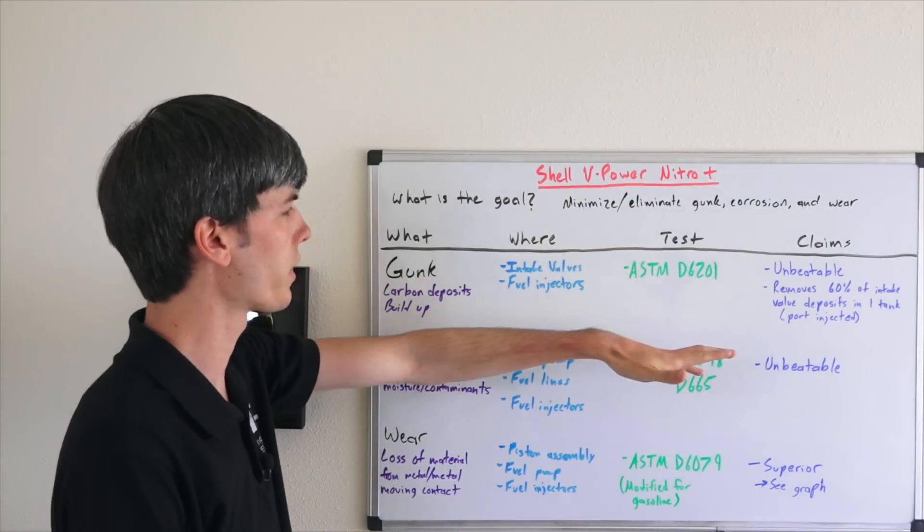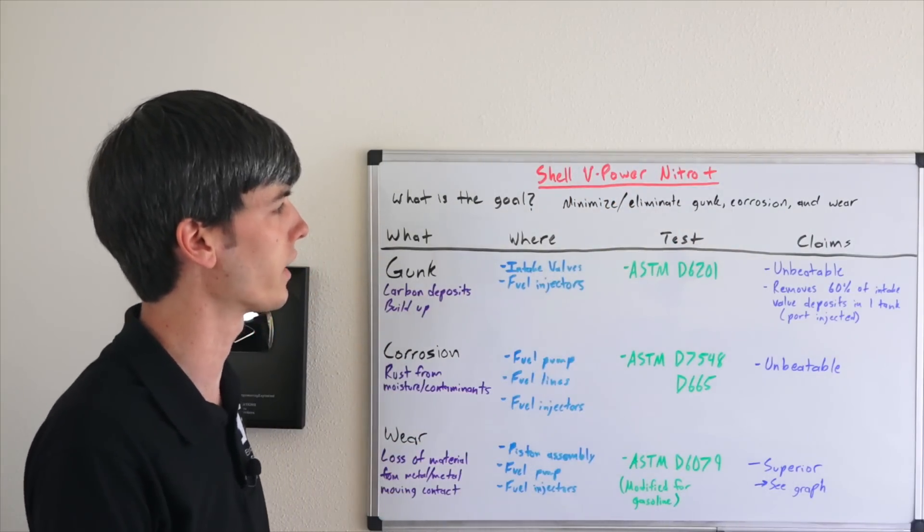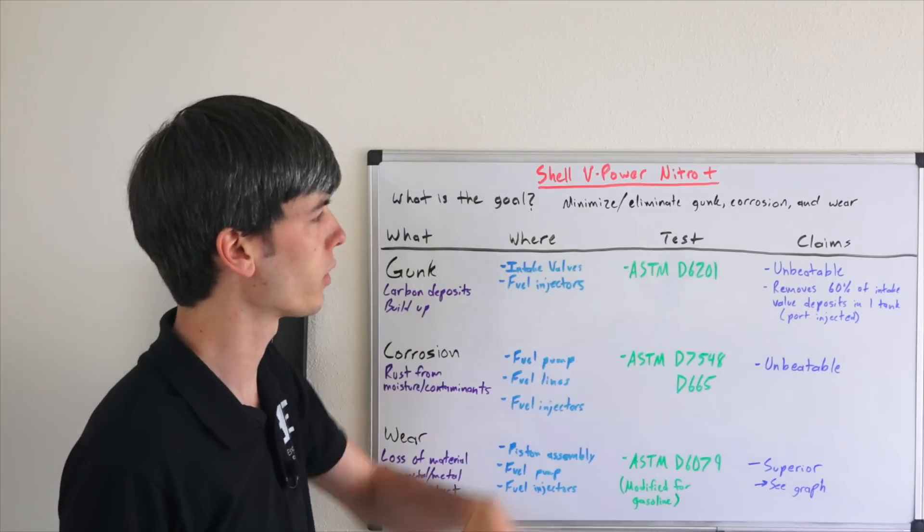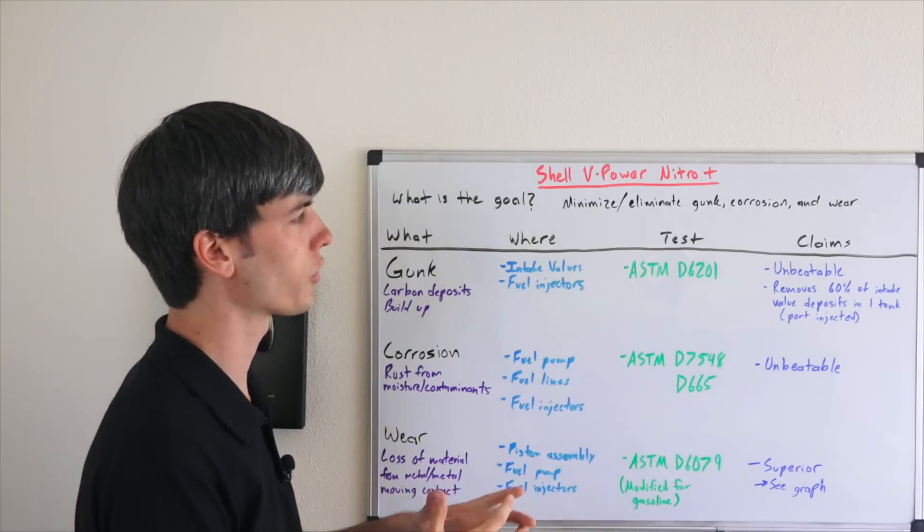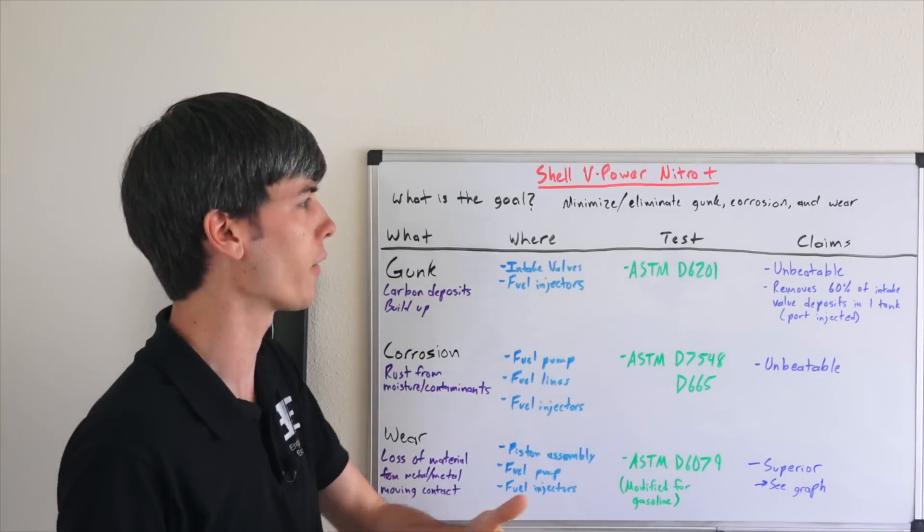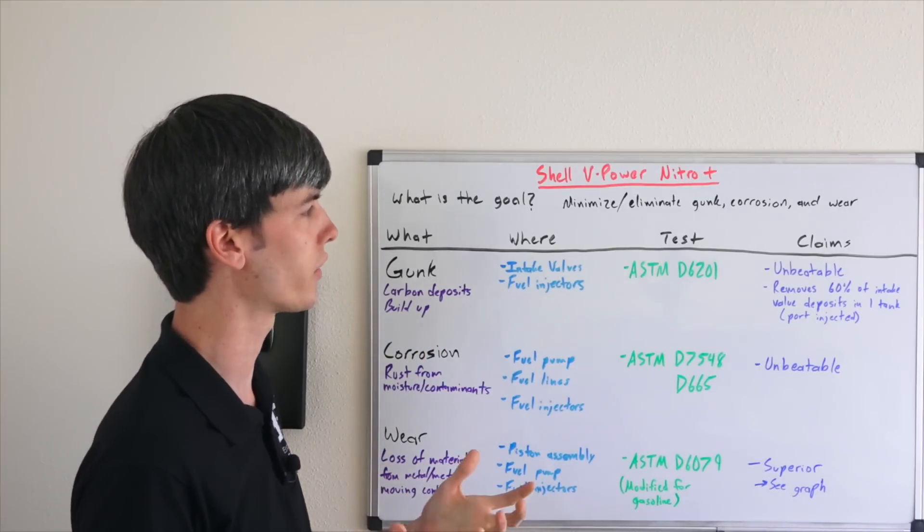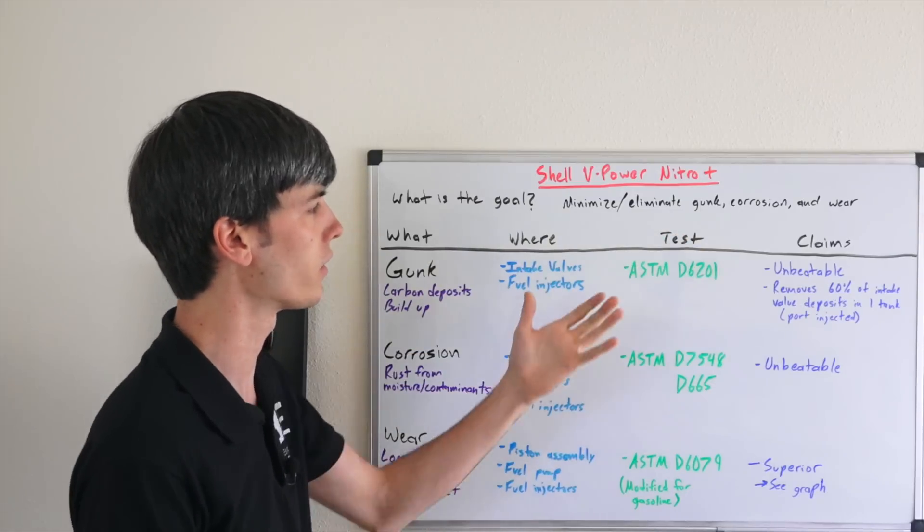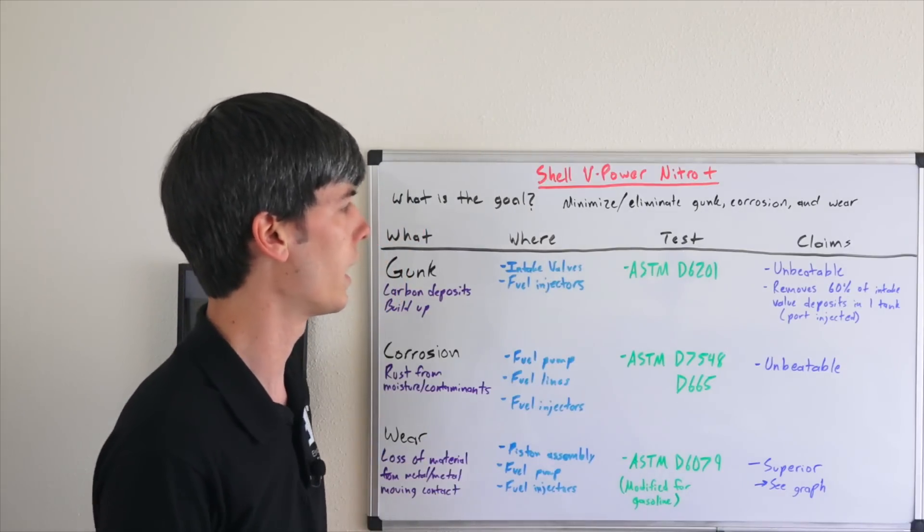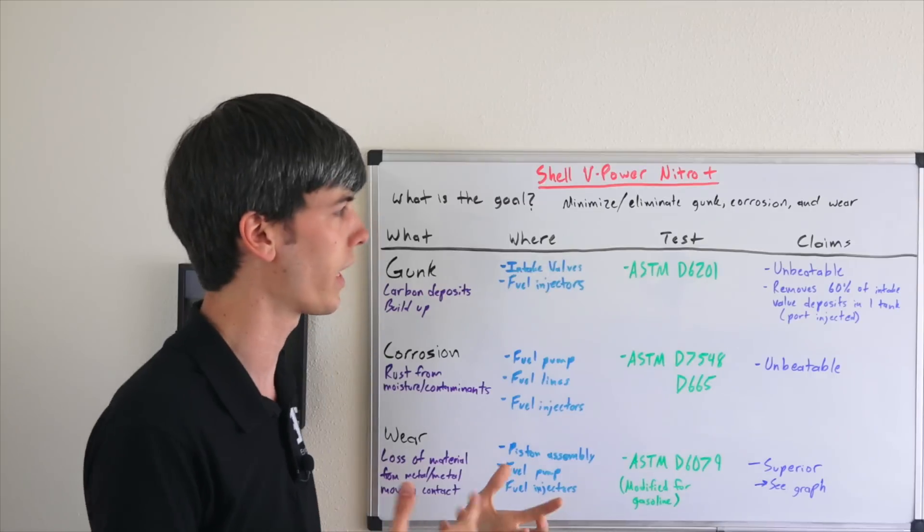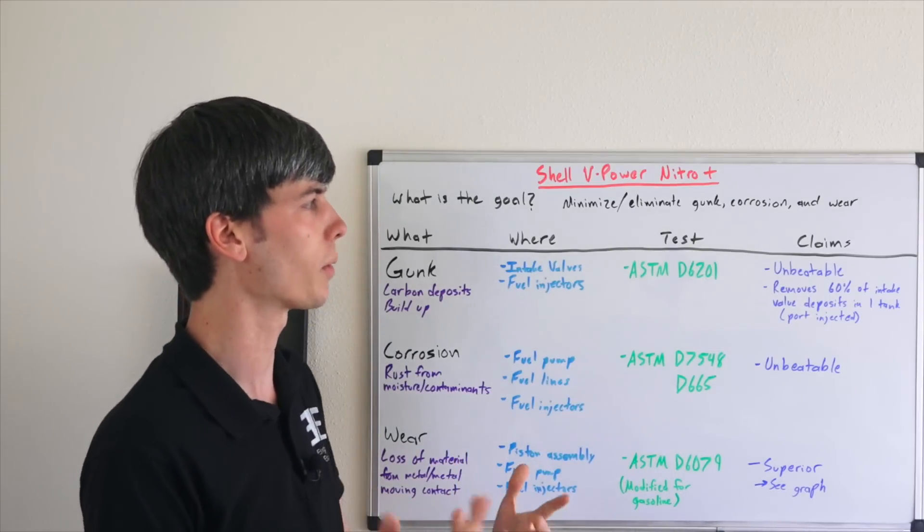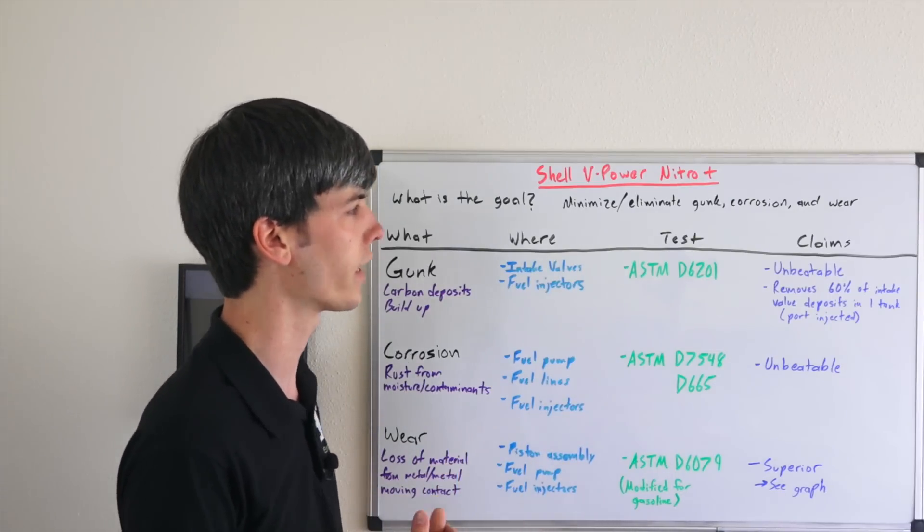Okay, so Shell's claim with gunk is that they have unbeatable protection against it. If we're to put on our lawyer hat and define what does this word mean, it basically just means you can't do better than that. Another fuel could be as good out there, it is possible for another fuel to be as good, but you're not going to do better than it. And by looking at the testing that we saw, you can see that they actually did really well as far as how much carbon deposit they had build up. I kind of thought to myself, maybe this isn't something that's all that common, carbon build up on valves.